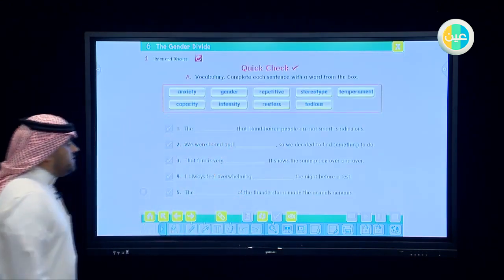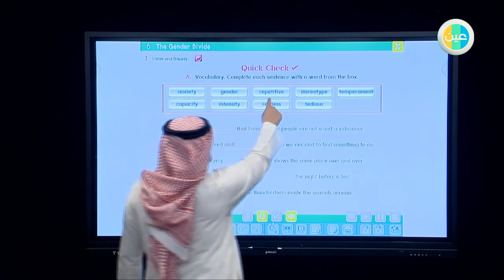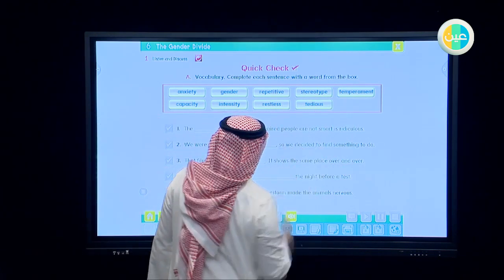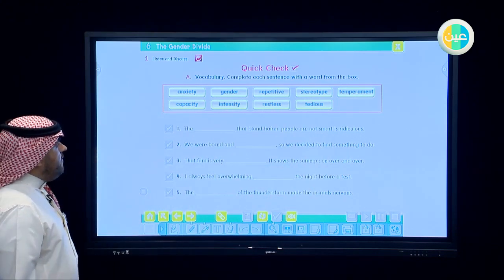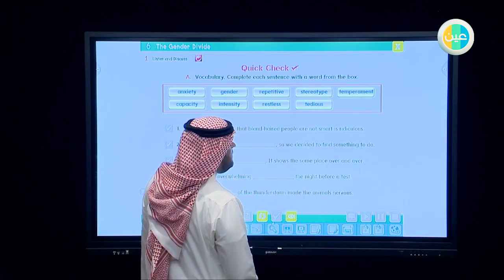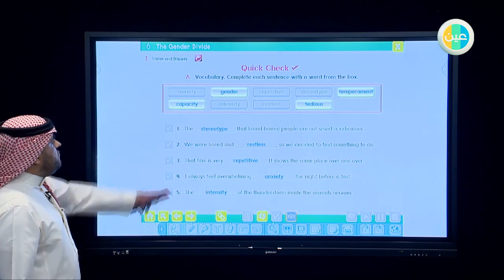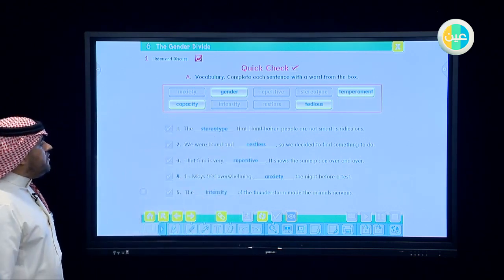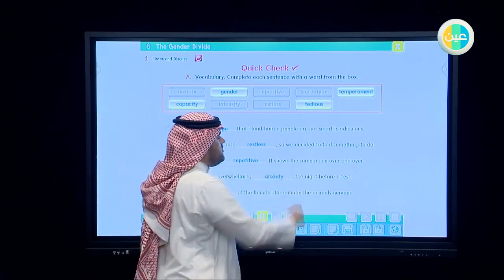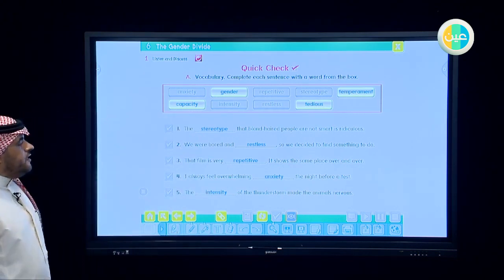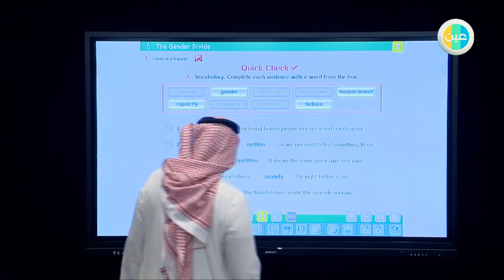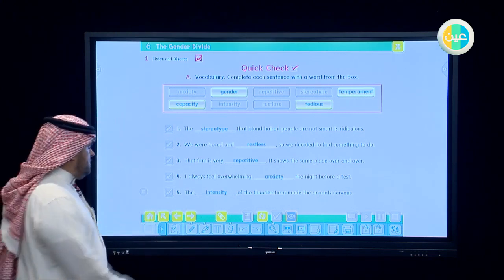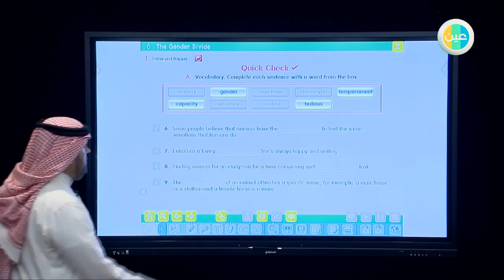And now let's go to the exercise to answer the questions now. Look at the words here: anxiety, gender, repetitive, stereotype, temperament, capacity, intensity, restless, and tedious. Let's put them in the right space. The first one, that blond-haired people are not smart is ridiculous. What's the answer? Stereotype. Number two, we were bored and restless so we decide to find something to do. Number three, that film is very repetitive. It repeats things very much. It shows the same place over and over. Number four, I always feel overwhelming anxiety the night before a test. Number five, the intensity of the thunderstorm made the animals nervous.